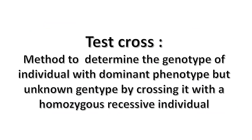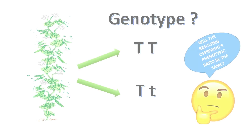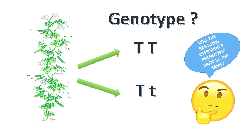The method is called test-cross. It is done by crossing the individual with dominant phenotype but unknown genotype with a homozygous recessive individual. Let's hypothetically build a test-cross genetic diagram for these two possibilities.